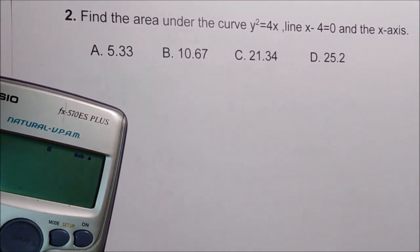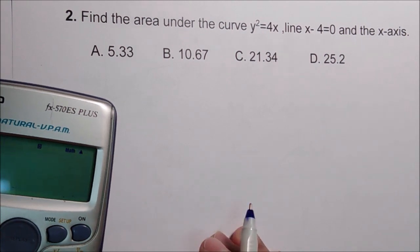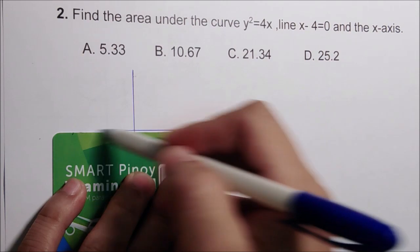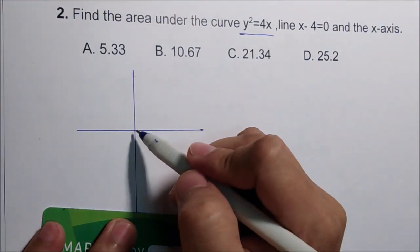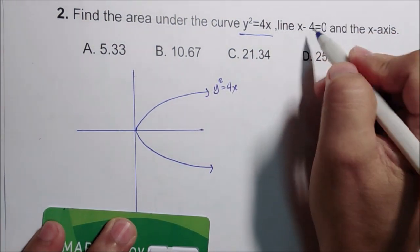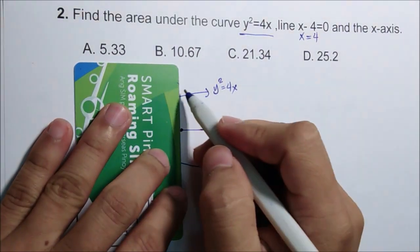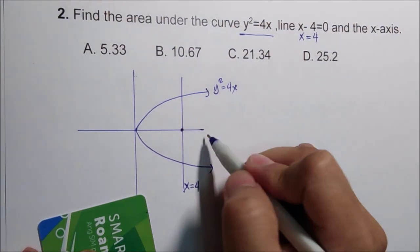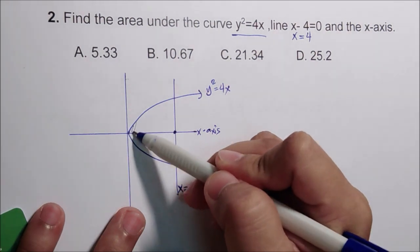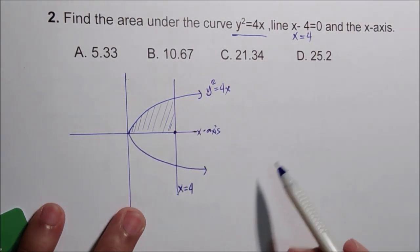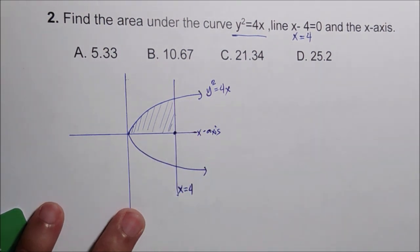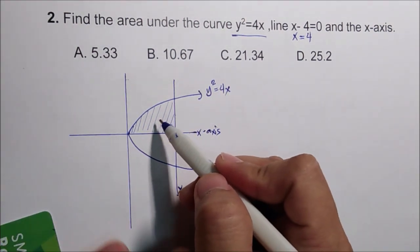Another example: Find the area under the curve y squared equals 4x, the line x minus 4 equals 0, and the x-axis. This is a parabola that opens to the right with vertex at (0, 0). The line x equals 4 is a vertical line. Since there are three boundary conditions, the required area is the region bounded simultaneously by the parabola, the line x equals 4, and the x-axis. We can use either a horizontal or vertical strip here.